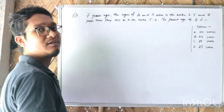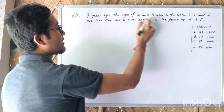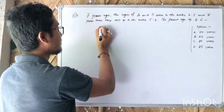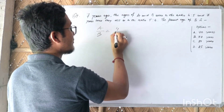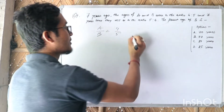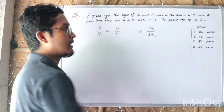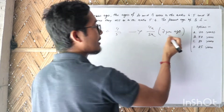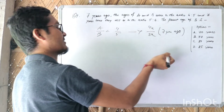This question is a bit more complicated. We let the present ages be 4x and 5x. Then we apply the condition for seven years hence: the ratio becomes 5 to 6.